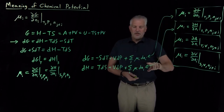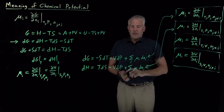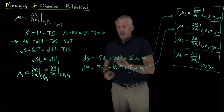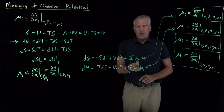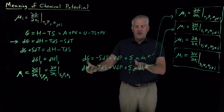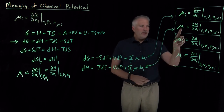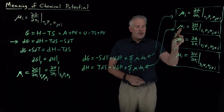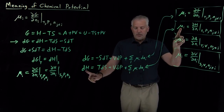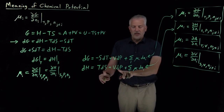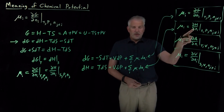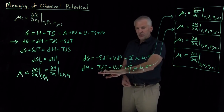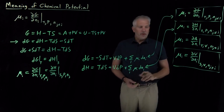Looking at this expanded fundamental equation, the chemical potential — just like the entropy and the volume — is one of the fundamental derivatives. It tells us how the free energy is changing as I change the number of moles at constant temperature and pressure. This expression tells us that the chemical potential is the rate of change of the enthalpy as I change the number of moles, as long as I do it at constant entropy and pressure. So these definitions of the chemical potential are related to these expanded versions of the fundamental equation.